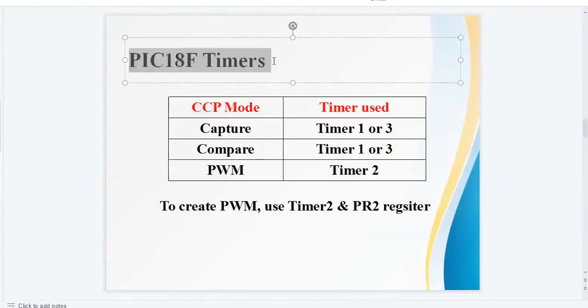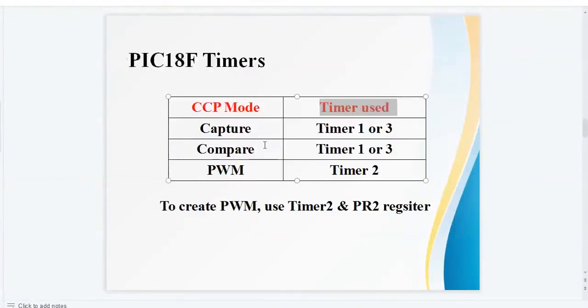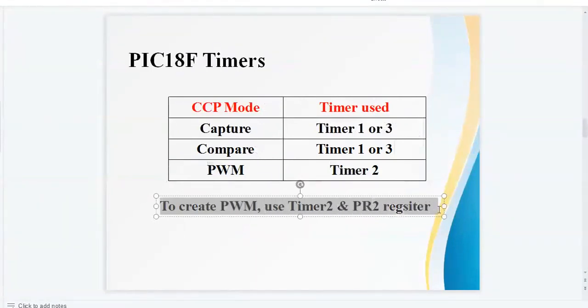PIC 18F timers: there are different timers used as per the mode selected. For PWM mode, timer 2 is used. So to create PWM, use timer 2 and PR2 register.